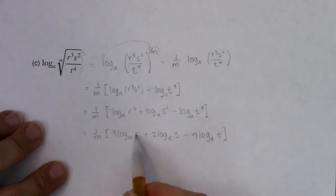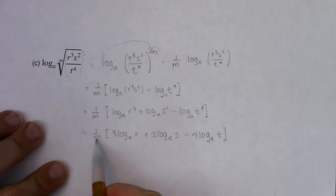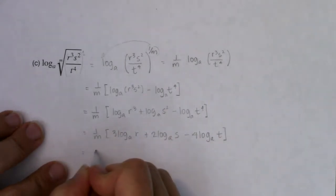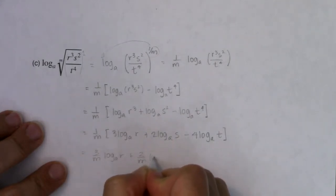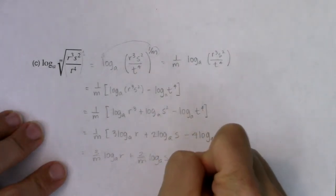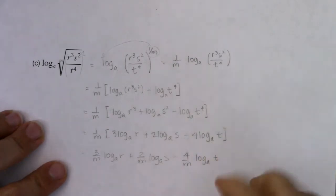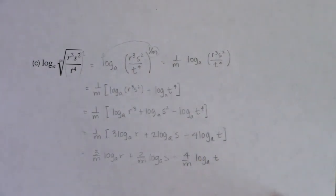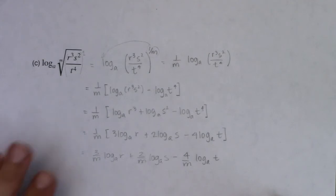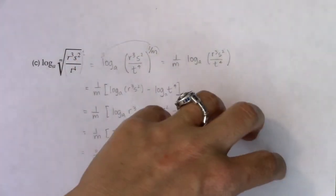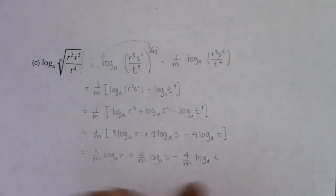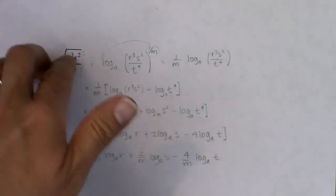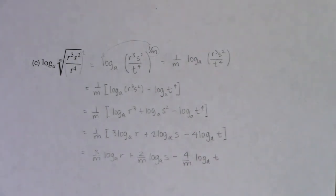I can't simplify these anymore — r, s, and t are not powers of a. But I can distribute that one over m now. So this will be 3 over m times log base a of r, plus 2 over m times log base a of s, minus 4 over m times log base a of t. Looking at that final answer, all of my arguments are pretty simple — just r, s, t. In examples 1 and 2, we've really expanded our logarithms: we started with a single logarithm and ended with multiple logarithms. In the next few examples, we're going to go the other way — given multiple logarithms, simplify down to one logarithm. I'll see you in a bit. Bye.